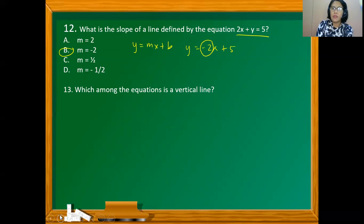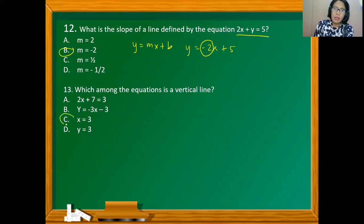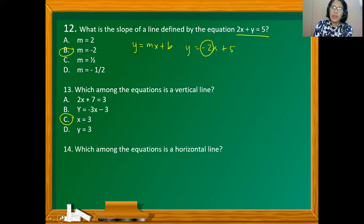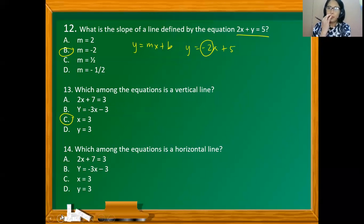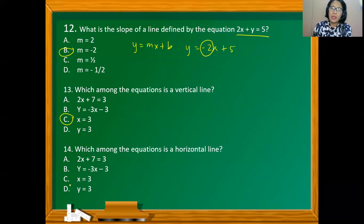Which among the equations is a vertical line? A vertical line has a constant x-coordinate, so the answer is C — whatever the value of y, x will always remain 3. On the other hand, which equation is a horizontal line? The y-coordinates of a horizontal line are constant, and option D has a constant y-coordinate always equal to 3, so the answer is D.